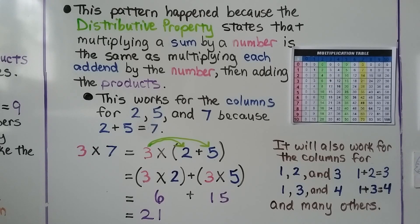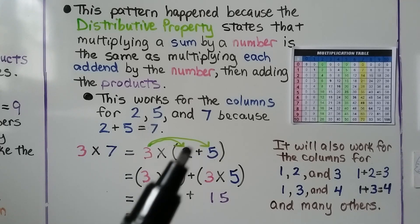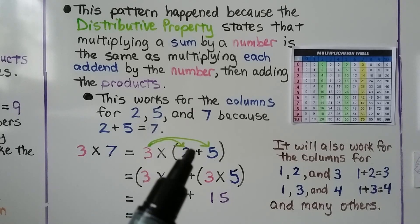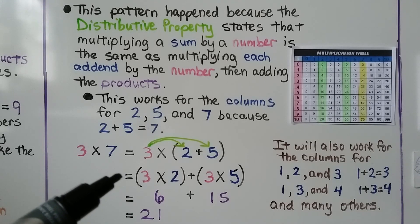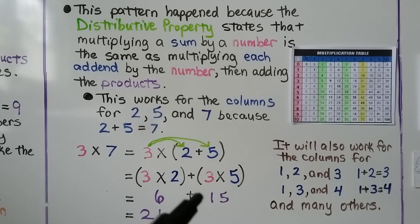This pattern happened because the distributive property states that multiplying a sum by a number is the same as multiplying each addend by the number, then adding the products. So if we multiply 7 times 3, it's the same as multiplying (2 plus 5) times 3 because 2 plus 5 equals 7. We distribute the 3: 3 times 2 plus 3 times 5. That's 6 plus 15, which equals 21. So 3 times 7 equals 21.